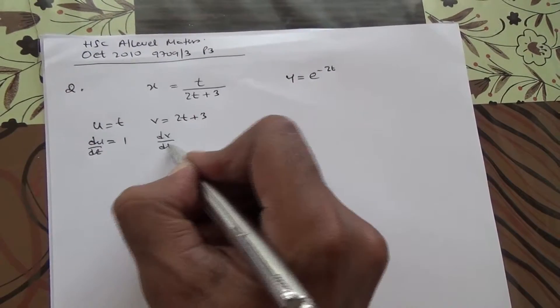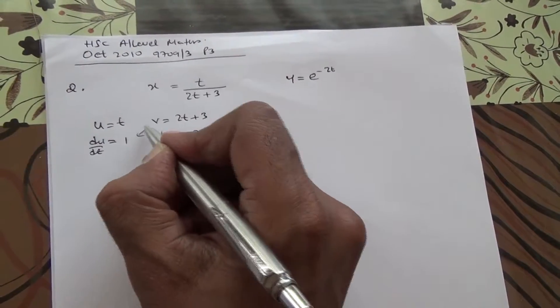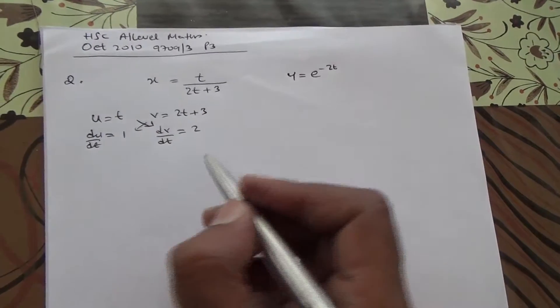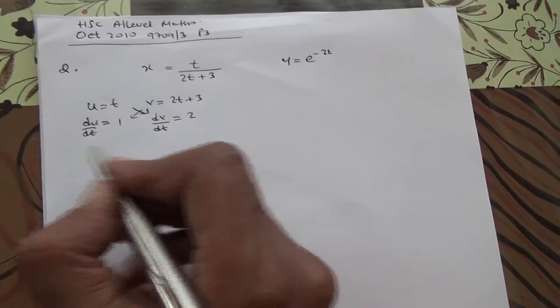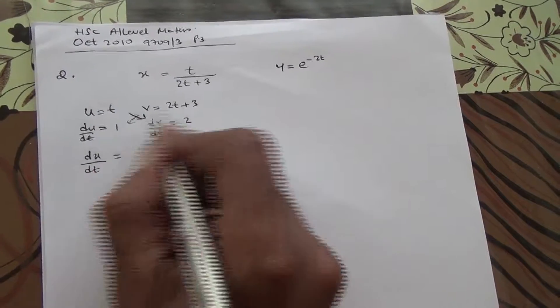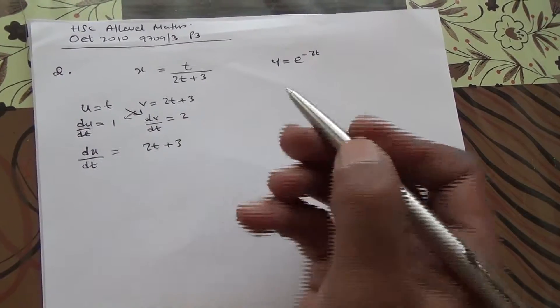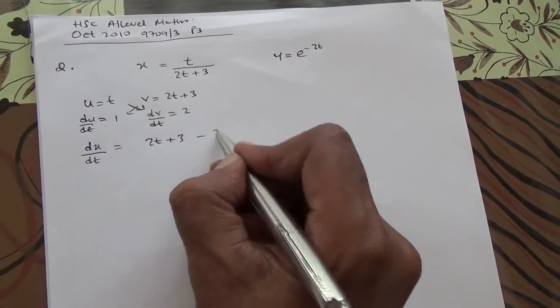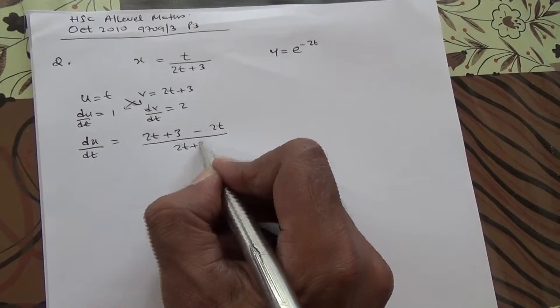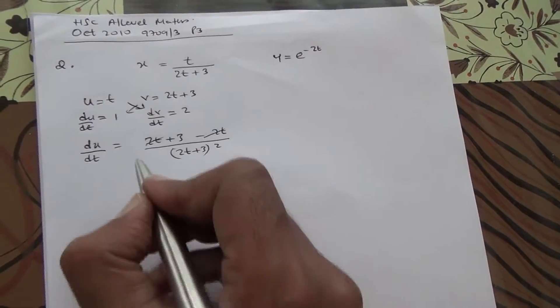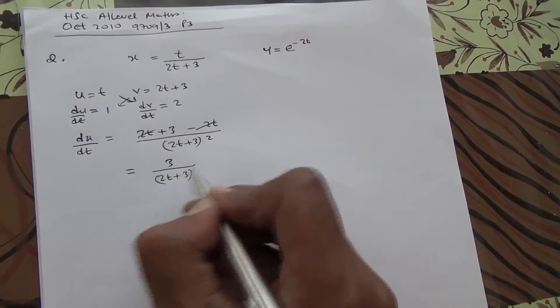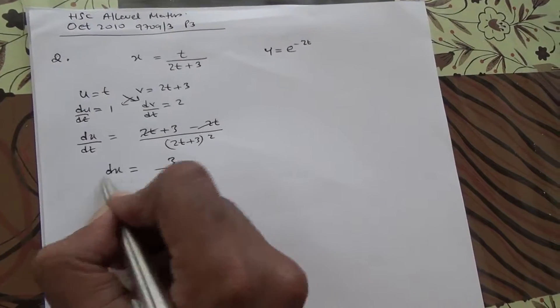So v du by dt minus u dv by dt over v squared, and that is quotient rule. I'm sure you're very familiar with this, so therefore we're going to say dx over dt equals v times 1, so 2t plus 3 minus 2 times t, which is 2t, all divided by v squared, so 2t plus 3 to the square. So these ones are going to cancel out, and we're going to be left with 3 over 2t plus 3 to the square, so this is dx over dt.